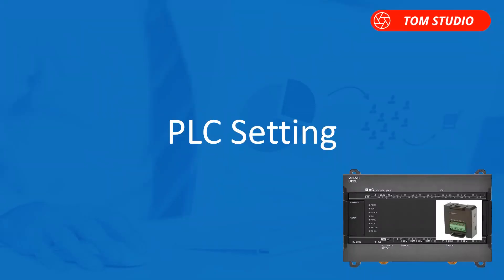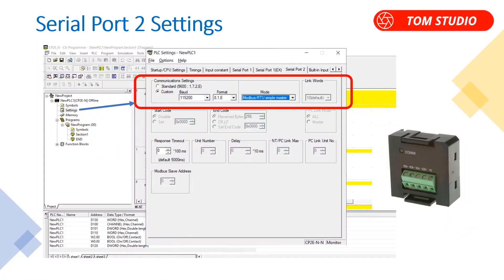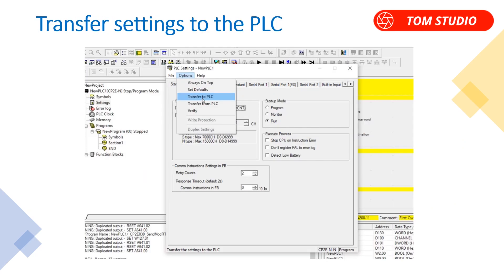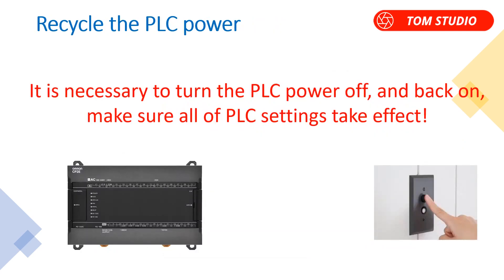Let's take a look at PLC port settings. It is necessary to configure the PLC serial communications port 2 as follows: baud rate 115.2 kbps, format 8-1-even, mode Modbus RTU simple master. Also, in the startup CPU settings, change the retry count to 2. The last step is to transfer the port 2 settings to the PLC. For CP series micro PLCs, it is always necessary to cycle the PLC power off and back on to make sure all settings take effect.